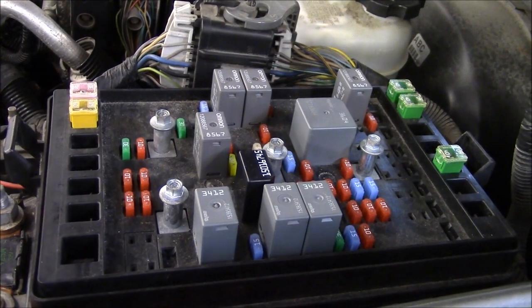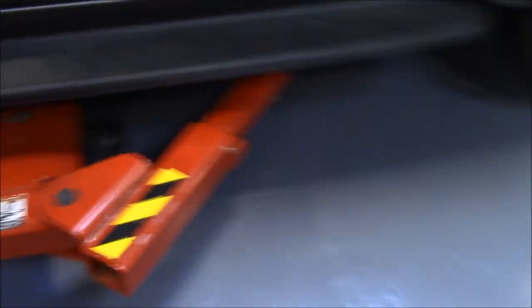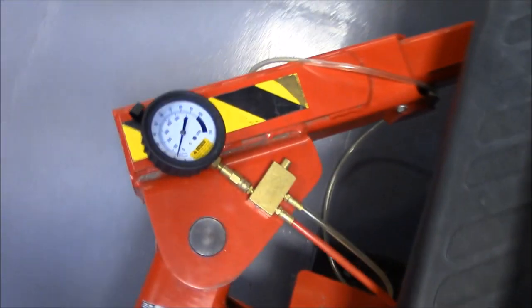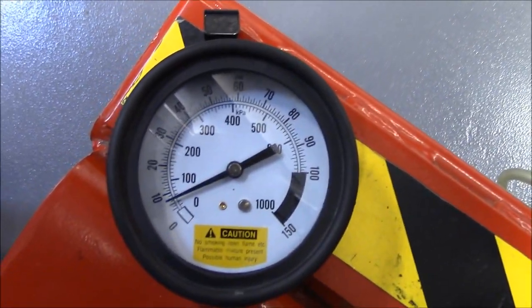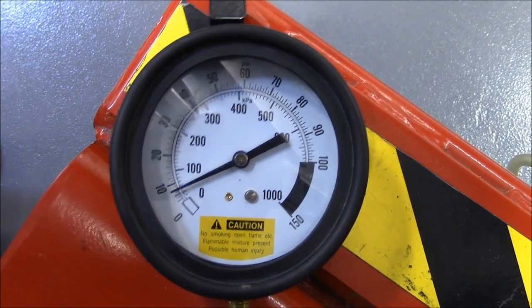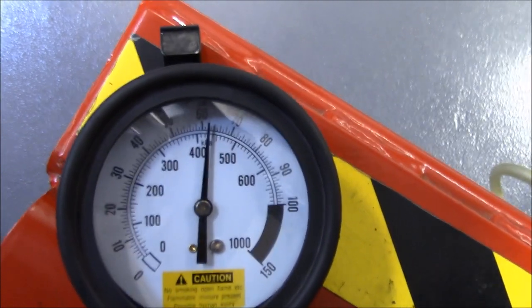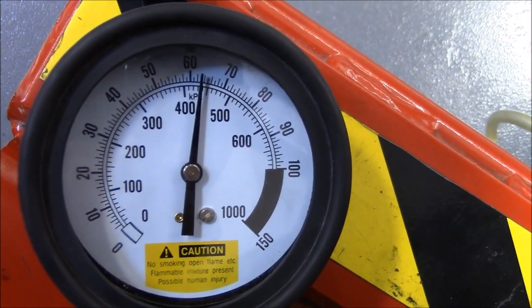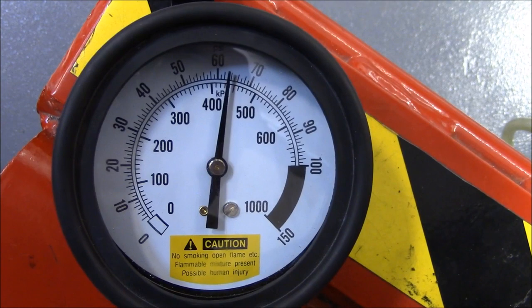On this 2004 GMC Envoy, I looked up the specifications for the fuel pressure and it is between 50 to 57 psi. Now I hooked up this pressure fuel gauge already and as you can tell the psi is well over that and is about 60 to 63 psi. This might be an indication of a faulty pressure relief valve. This is how you check fuel pressure with a fuel pressure gauge.